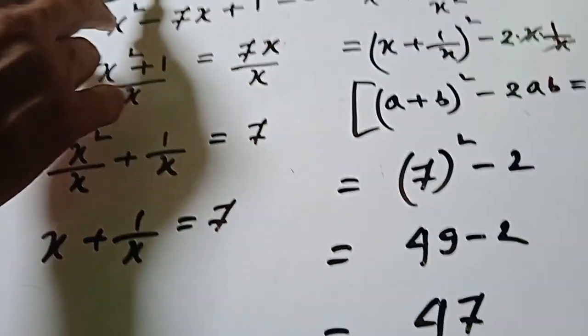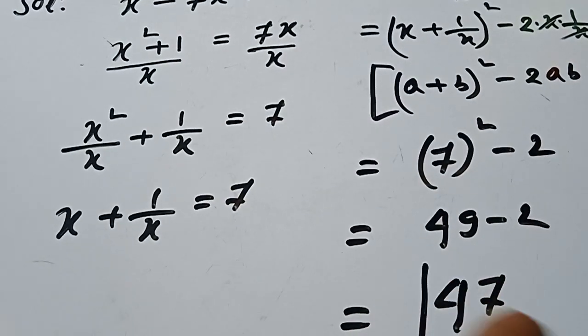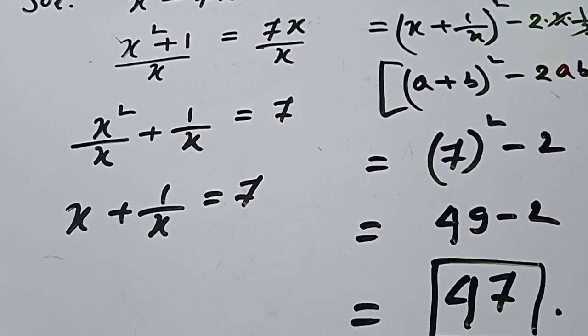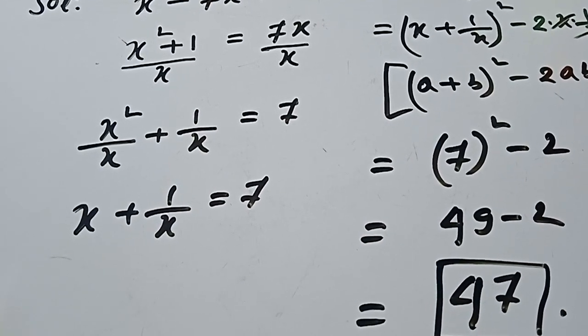So the final answer of x square plus 1 over x square is 47. Thanks for watching. Please subscribe my channel for new videos.